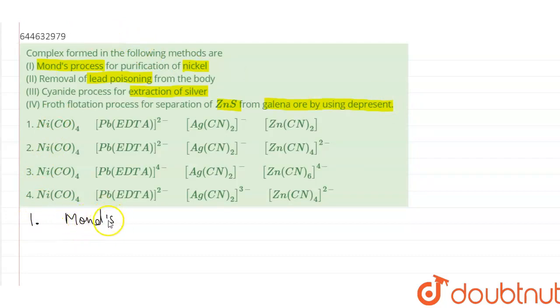The first process is Mond's process. The reaction involved in the Mond's process is nickel reacting with carbon monoxide.